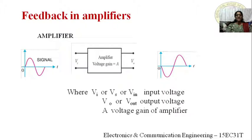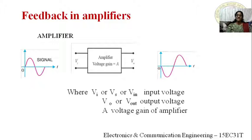For the amplifier circuit, we use the transistor BJT as the basic part. Depending upon configuration, we classify amplifiers as common base, common collector, and common emitter. Among these three, the common emitter (CE) amplifier is the most commonly used. It gives high power gain and moderate voltage and current gains, with medium input and output resistance, meeting requirements for communication, instrumentation, and medical electronics.